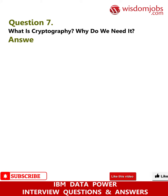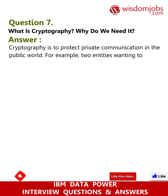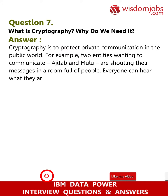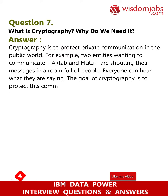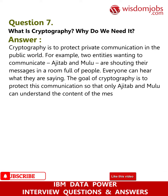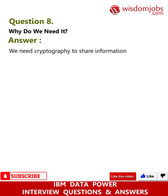Question 7: What is cryptography? Why do we need it? Answer: Cryptography is to protect private communication in the public world. For example, two entities wanting to communicate — Ajtub and Mulu — are shouting their messages in a room full of people; everyone can hear what they are saying. The goal of cryptography is to protect this communication so that only Ajtub and Mulu can understand the content of the messages.